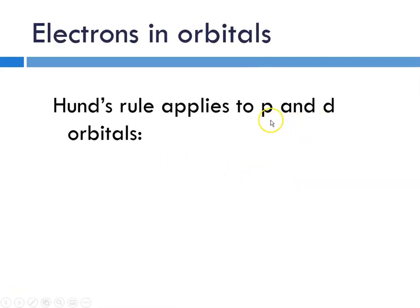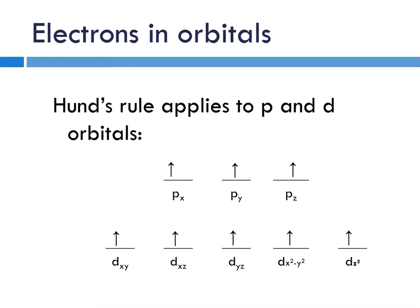Hund's rule applies to p and d sublevels and orbitals. Here is a representation of a p sublevel: px, py, pz, and a d sublevel: dxy, dxz, dyz, dx squared minus y squared, and dz squared. Filling the p sublevel, we put the first one there, and we resist the urge to put the second one pointing down next to it. It's got to go there, and the third one's got to go there. We can't start pairing these up until each of the orbitals in this sublevel has an electron. Same thing goes for the d's. You have to put the first one, second, third, four, and five. We cannot pair them up until everybody has an electron.